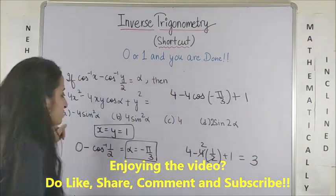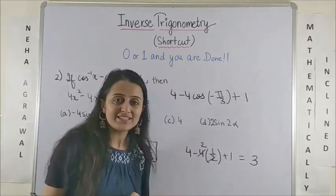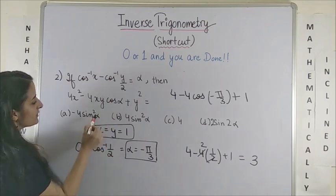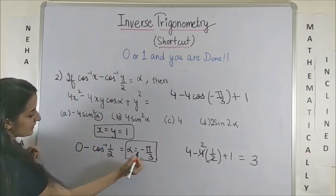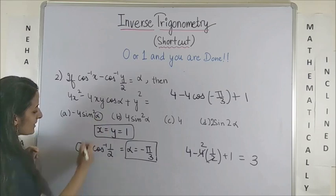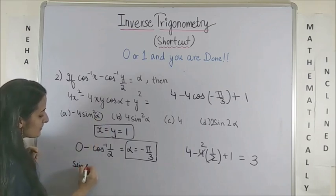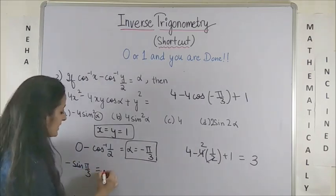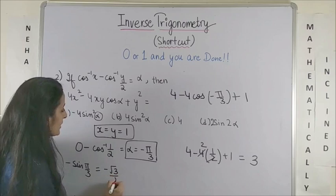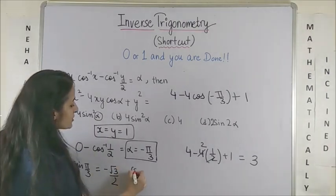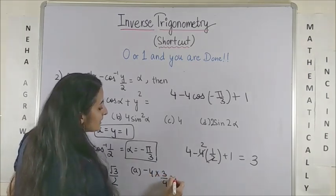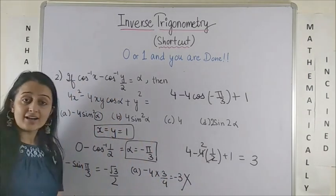Now let's see which of these options would give us the answer 3. So in this case, if I take alpha to be minus pi by 3, you know sin of minus pi by 3 would be minus sin pi by 3. This would give us the answer minus root 3 by 2. So if I square it, my first option gives me the answer minus 4 into 3 by 4. That's minus 3, not the answer.